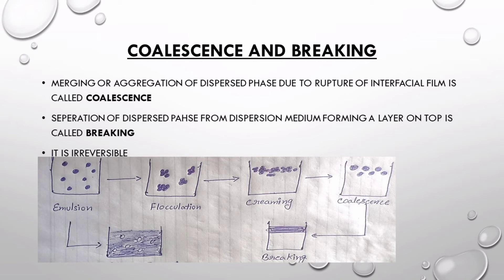Next is coalescence and breaking. Starting from a good emulsion, it first flocculates, then flocculation leads to creaming, and now creaming leads to coalescence. In coalescence, these aggregates or flocs fuse together to form a bigger dispersed phase globule due to the rupture of the interfacial film. As you can see in this diagram, the difference between creaming and coalescence is clear: in creaming, separate dispersed globules have just aggregated together, but in coalescence they have merged to form a bigger single globule.